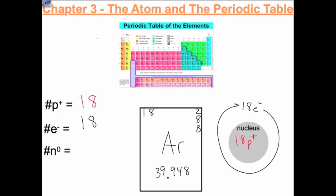To find the number of neutrons, we take that atomic mass and subtract the number of protons. But we have to round the atomic mass. You can't have 0.948 protons or neutrons. 39.9 rounds to 40. Subtract the 18 protons, and you end up with 22 neutrons. Those neutrons are in the nucleus with the protons.